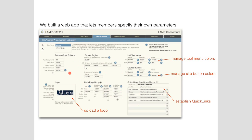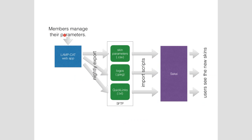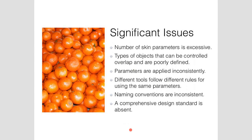We allowed people to upload their own logos, and we also added the quick links work done by Oxford. So the idea is that our users can specify their skin colors on this form. We export nightly three different files: one contains the skin parameters, one contains the logos, and one contains the quick links. That gets imported by our hosting company into Sakai, and the users can see these new skins. Instead of compiling CSS and all that complicated stuff, now people can just say I want this color to be here. The problem — and this is where the project comes in — is that the number of parameters is rather excessive. There are a lot of different types of objects that can be controlled and they're not always well defined; frankly, they're applied inconsistently. We've spent since about June tracing these down trying to figure out what they are.